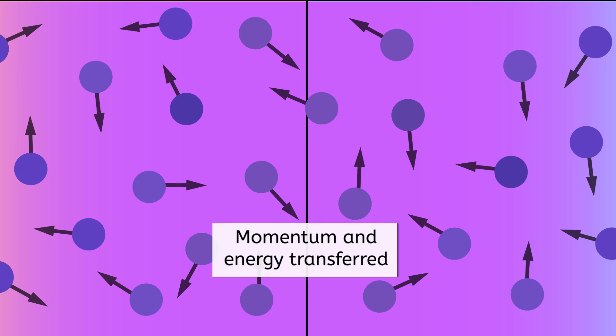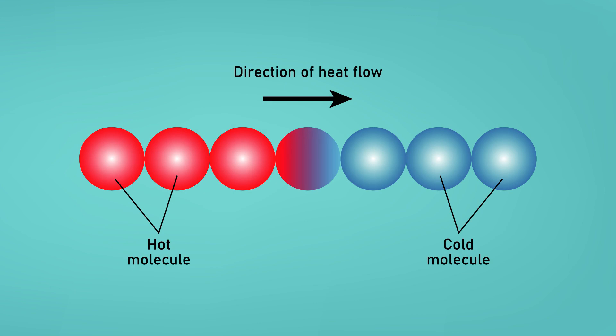Eventually, if contact continues, all particles in both objects will be at the same temperature, with all particles moving the same average speed, and no more heat transfer will occur. Heat is always transferred from hot to cold, because it is the faster moving particles that have momentum to lose when they collide with slower particles.